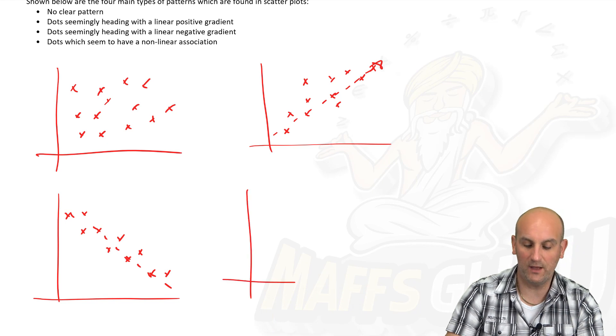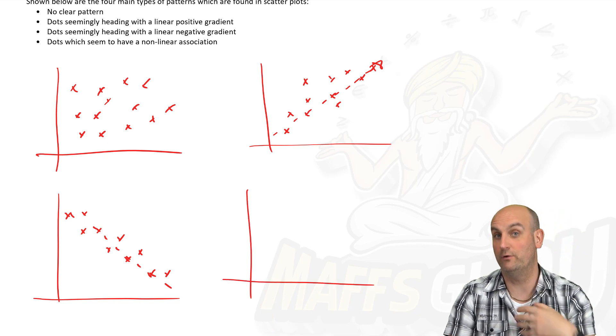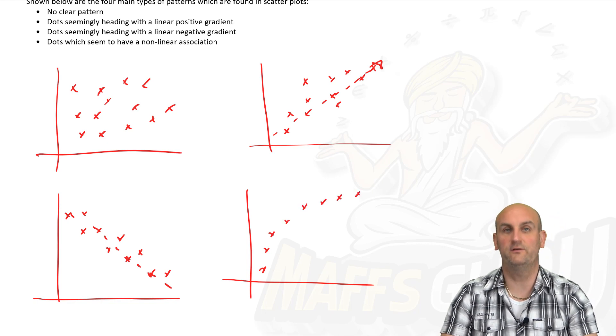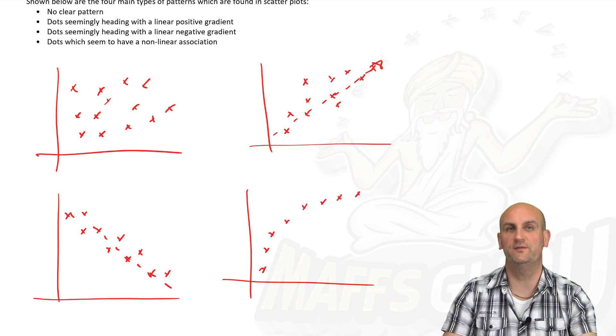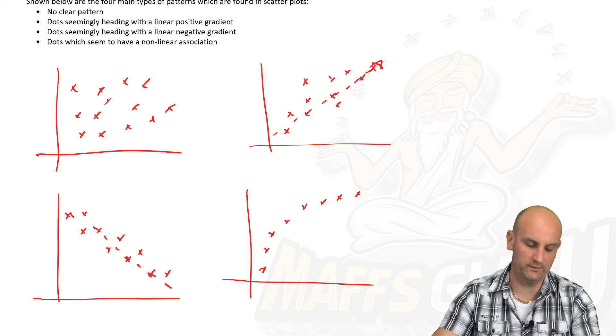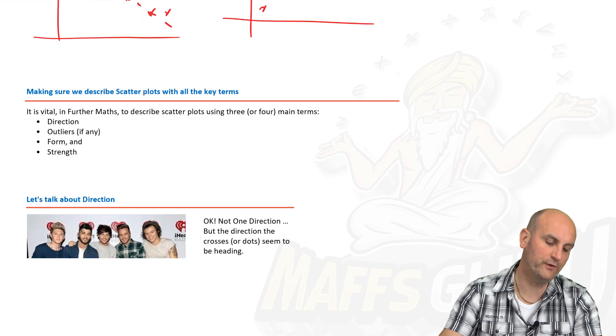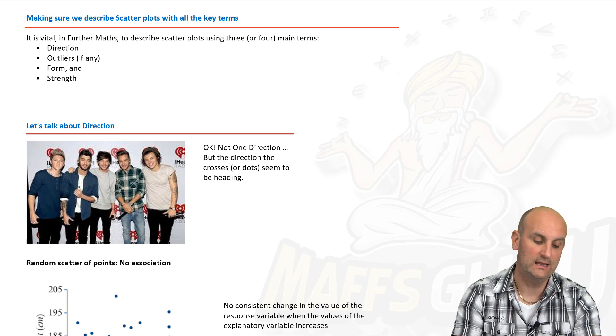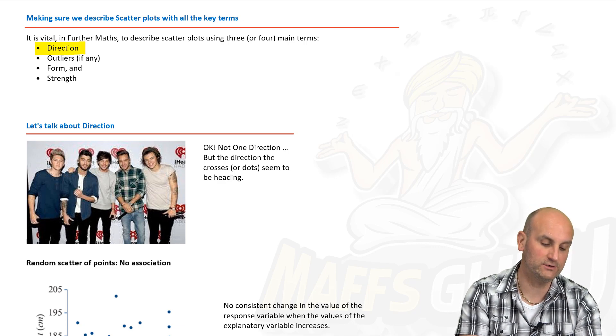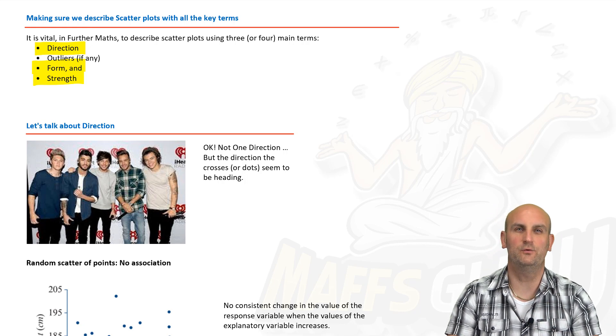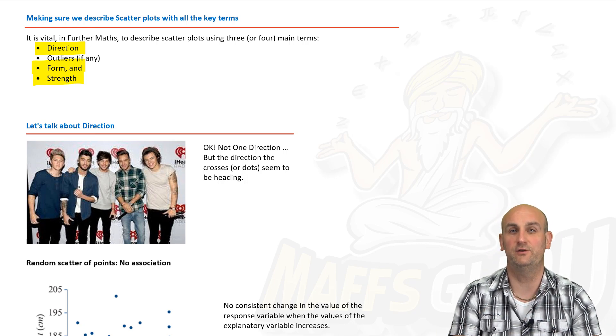Now, dots which seem to have a non-linear association. So non-linear would suggest that we have some sort of curve, for example. Now, we will be dealing with all of these and how to analyze them throughout the rest of this course. So, summary book, vitally important at this moment in time. So, we need to be able to describe scatterplots using the correct terminology. And as we say here, we say direction, form, and strength. Now, if I put outliers there second, generally speaking, you will discuss those or you will add a sentence to your report outside of the direction, form, and strength.